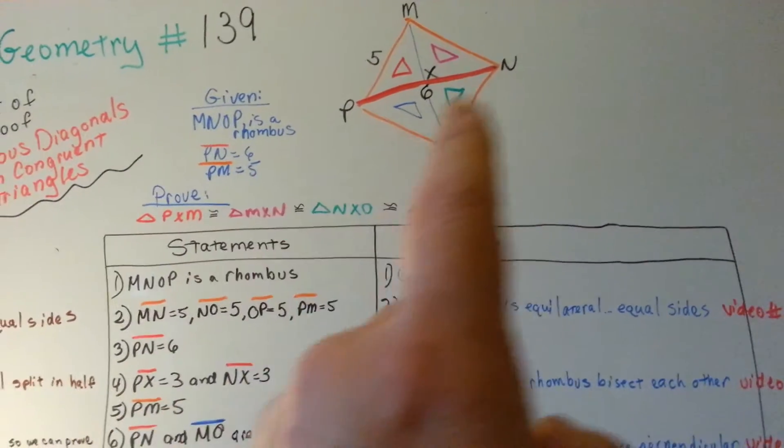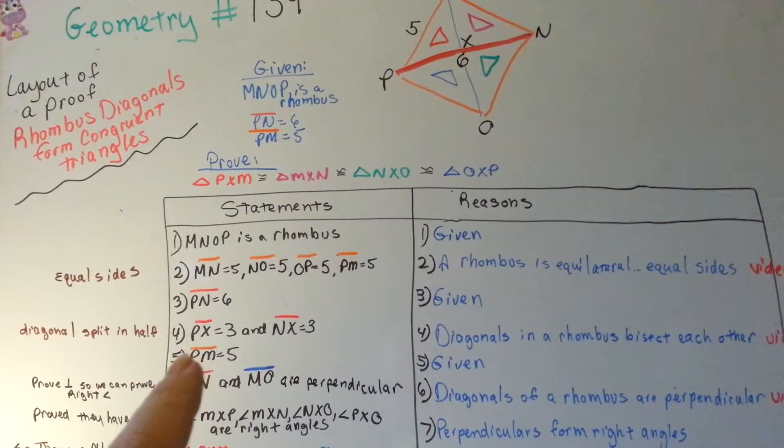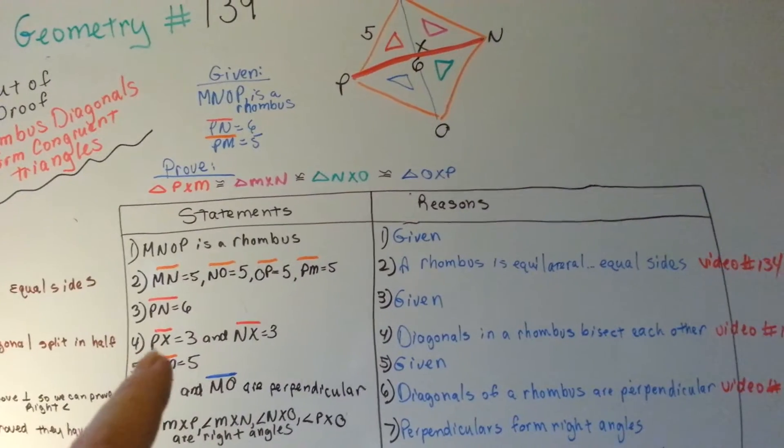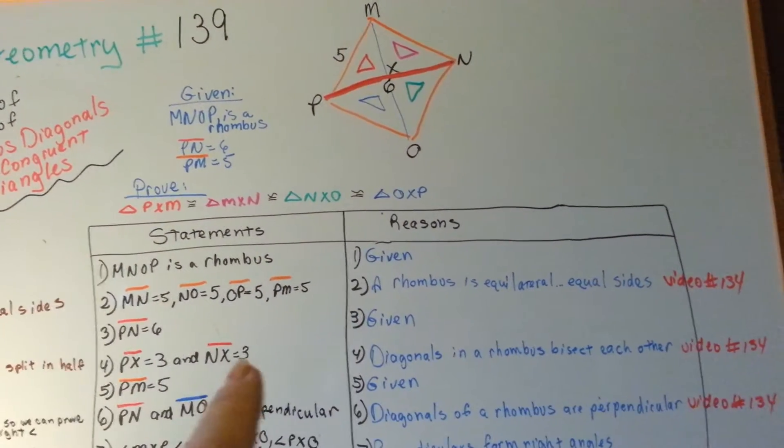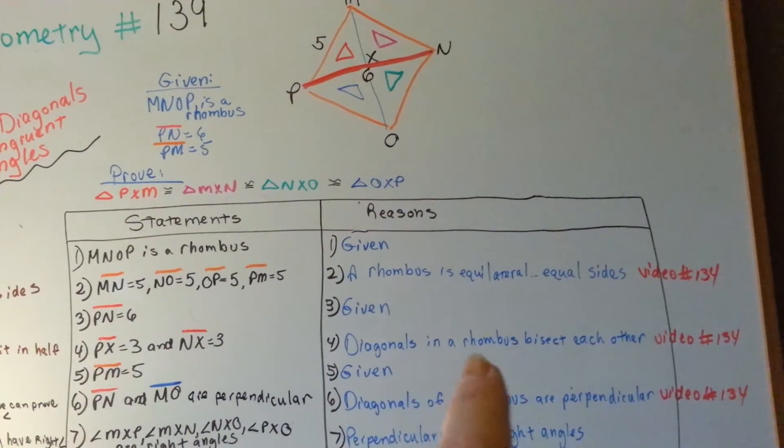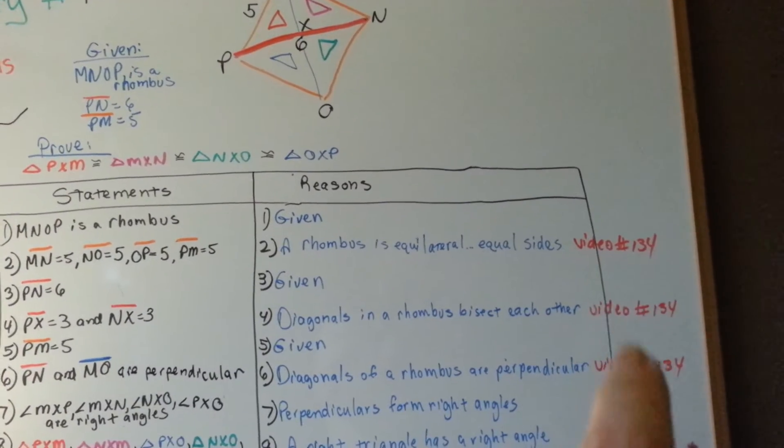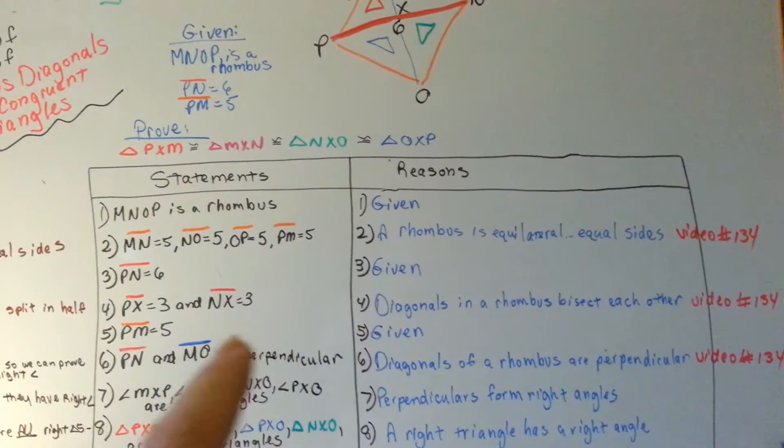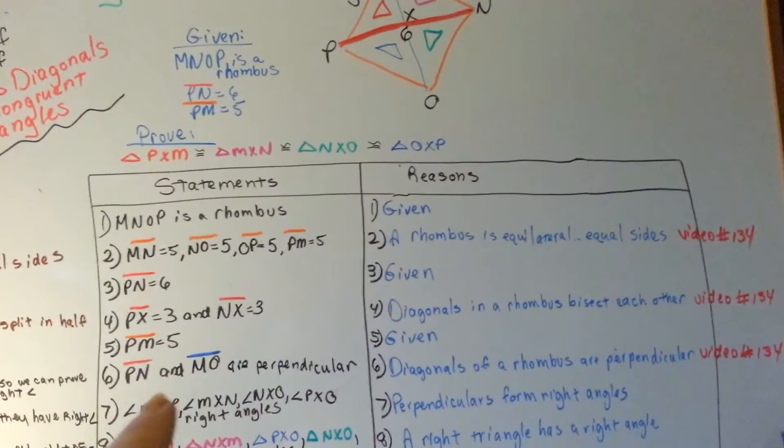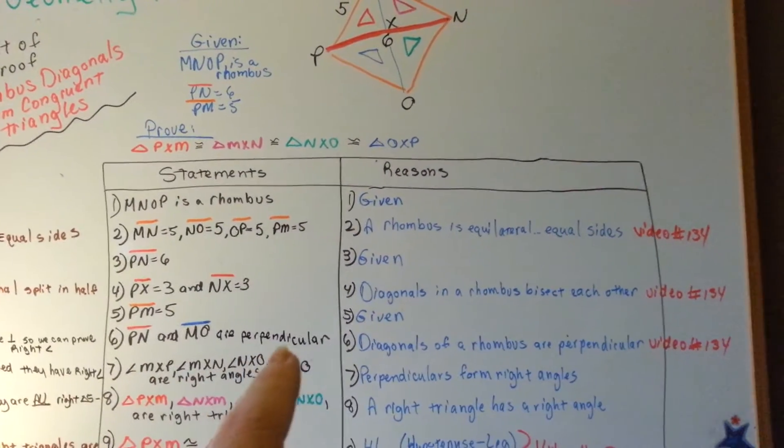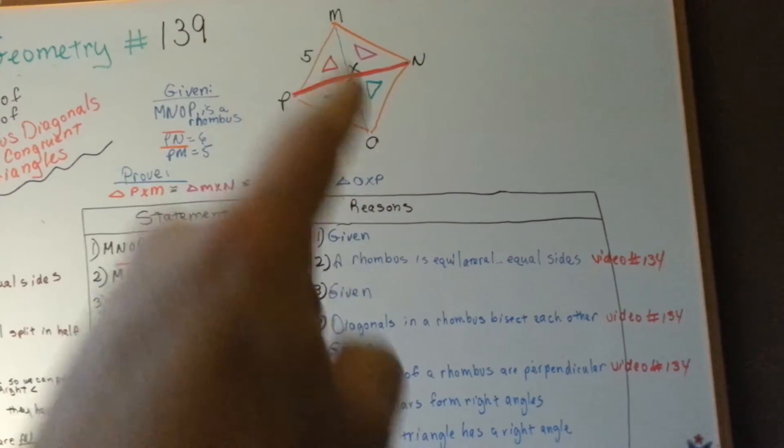Now, PN is 6, that's the diagonal, that's given. So if you split it in half, PX is 3, X is the center, and NX is 3 because diagonals in a rhombus bisect each other. Now if you have a problem with any of these, this is in video 134 that I did. So PM is 5, that's given. PN and MO are perpendicular because diagonals of a rhombus are perpendicular. These are perpendicular.